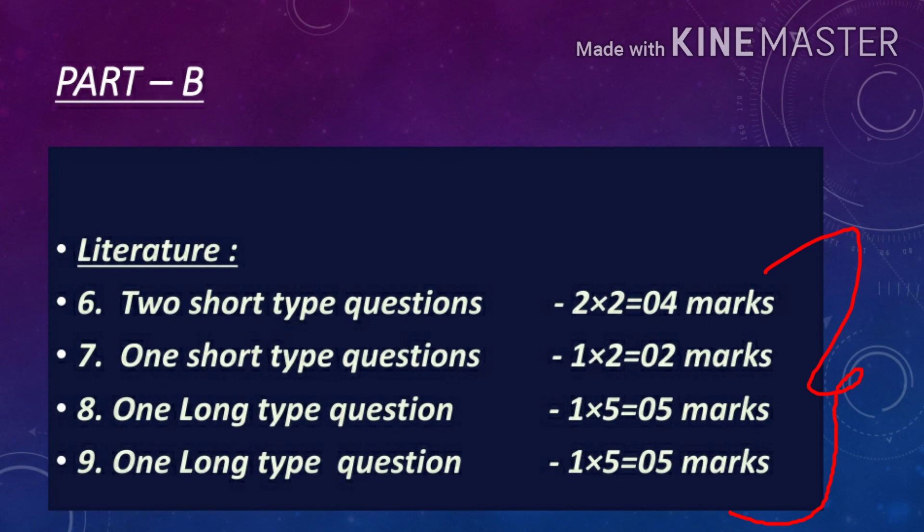Question number 8 is one long type question. It can be from prose or poetry from your book Hornbill. You have to answer approximately 120 to 150 words. There will be two questions in which you have to answer only one, and this carries 5 marks.